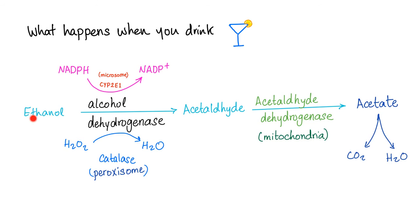What happens when you drink alcohol? There is an enzyme called alcohol dehydrogenase that converts ethanol into acetaldehyde. In this step, NADPH is converted into NADP. This enzyme is in the microsome, called cytochrome P2E1. At the same step, hydrogen peroxide is converted into water by an enzyme called catalase, thanks to the peroxisome. Acetaldehyde, via the enzyme acetaldehyde dehydrogenase, is converted into acetate, which breaks down into carbon dioxide and water. This acetaldehyde dehydrogenase is in the mitochondria. So when you drink alcohol, the microsome works, the peroxisome works, and the mitochondria works — all of them cursing you when you drink excessively.